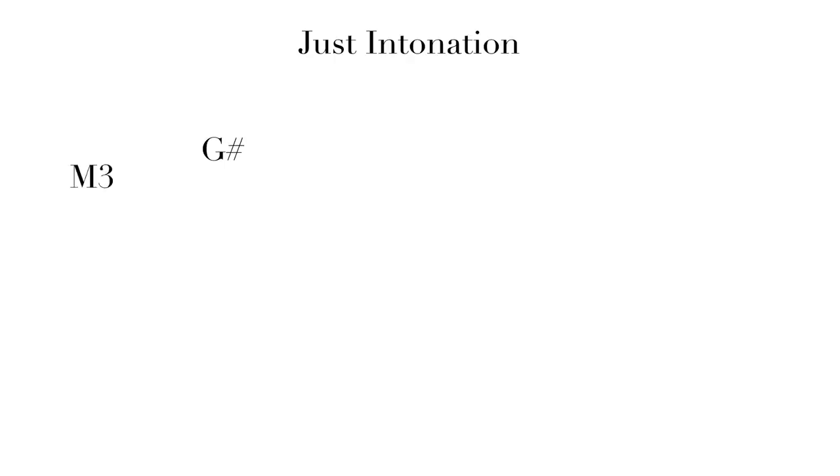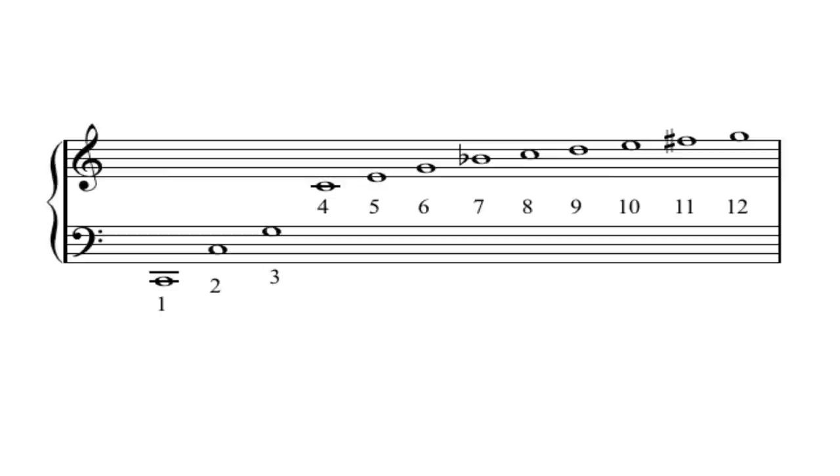Now, to get to the point of the episode, that G sharp is 2 major thirds above C, an augmented fifth. 5 to 4 times 5 to 4. However, A flat is a minor 6th away from C. And as we can see from the harmonic series, the ratio for a minor 6th is 8 to 5.